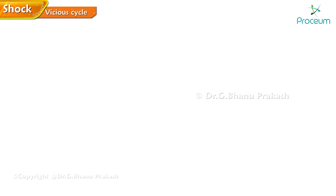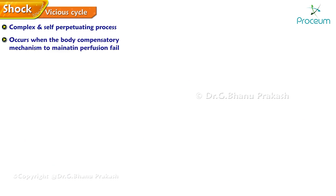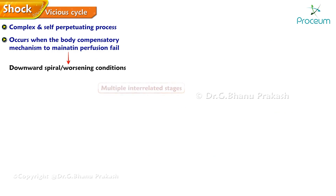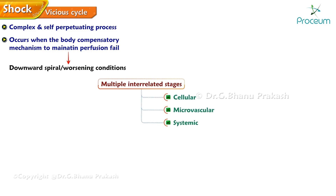The vicious cycle of shock is a complex and self-perpetuating process that occurs when the body's compensatory mechanisms to maintain perfusion fail, leading to a downward spiral of worsening conditions. It involves multiple interrelated stages and symptoms, including cellular, microvascular, and systemic responses.